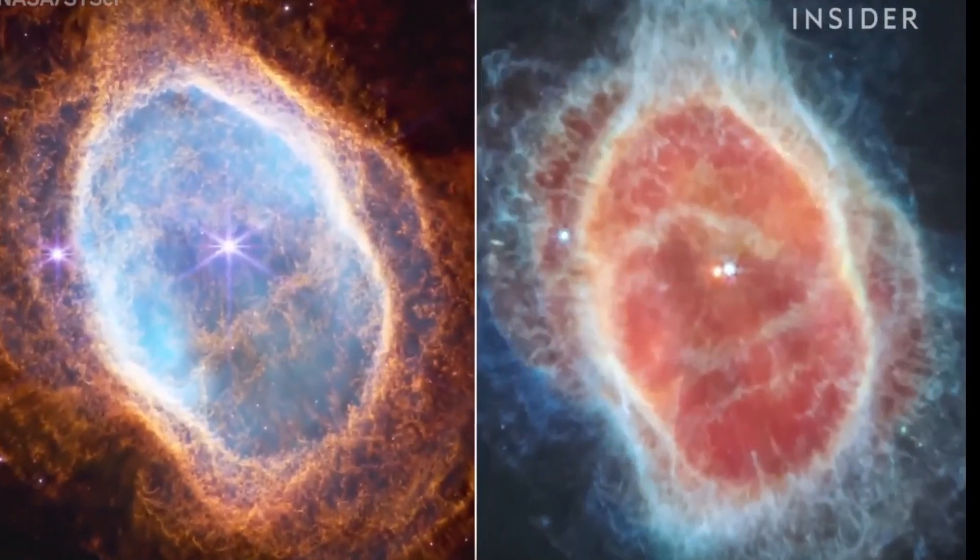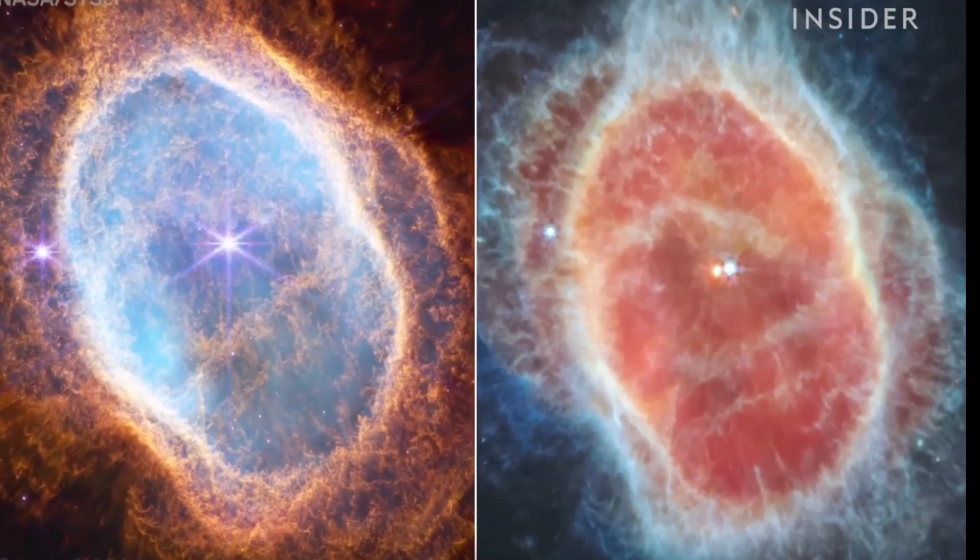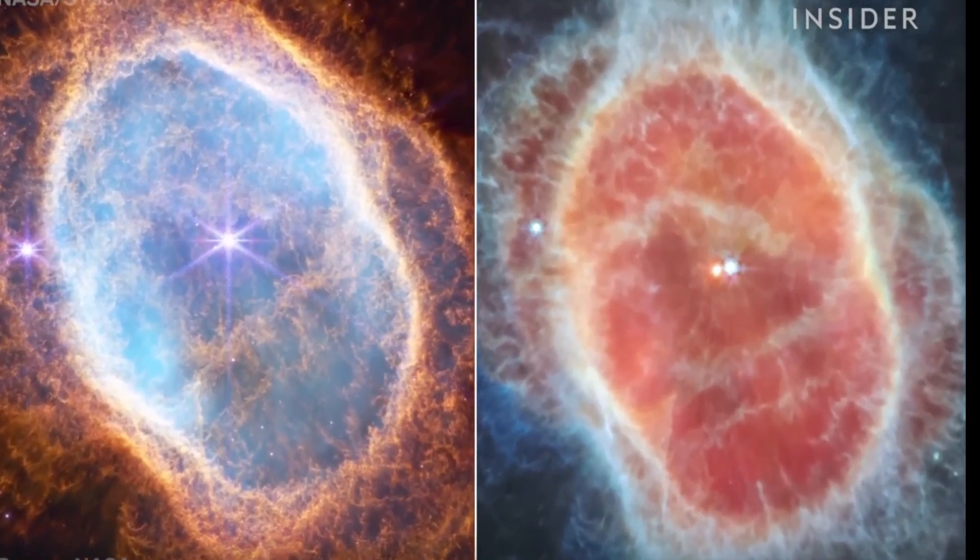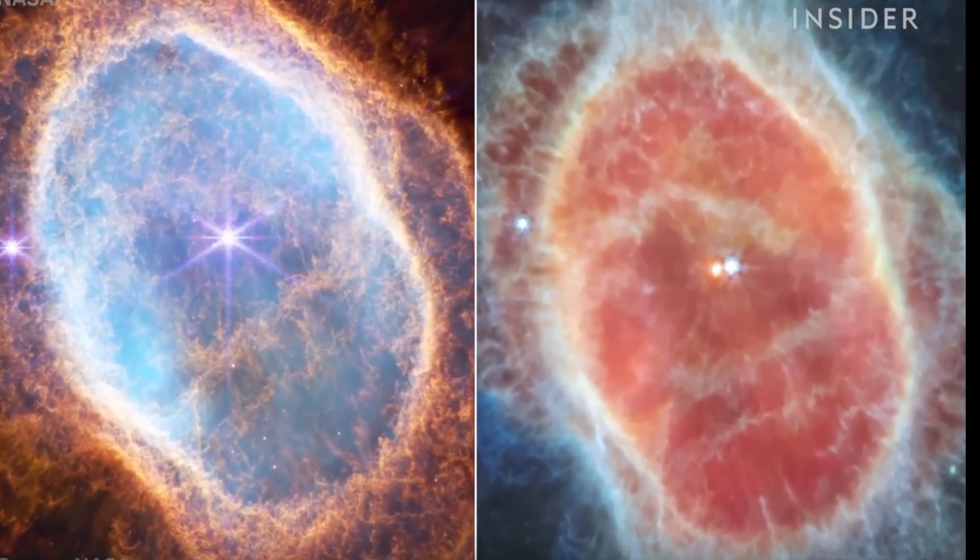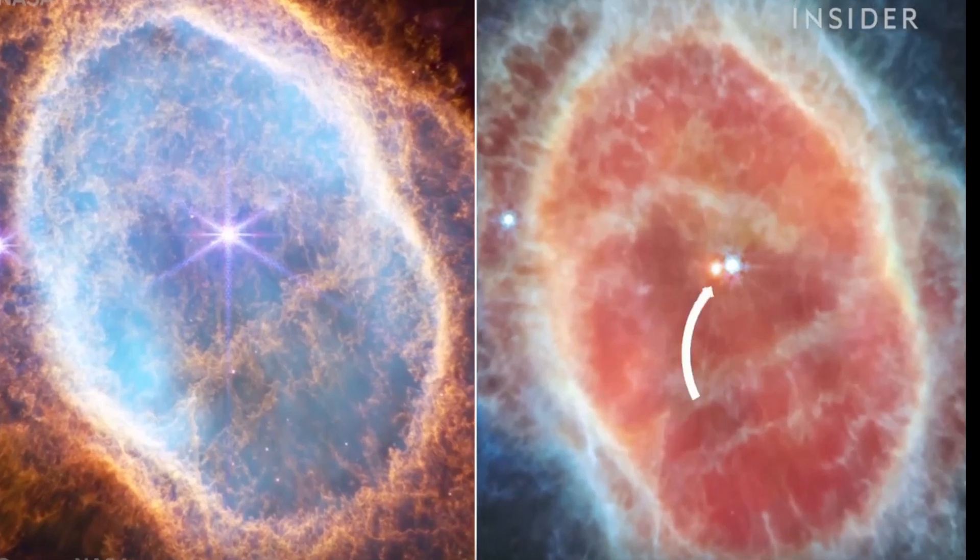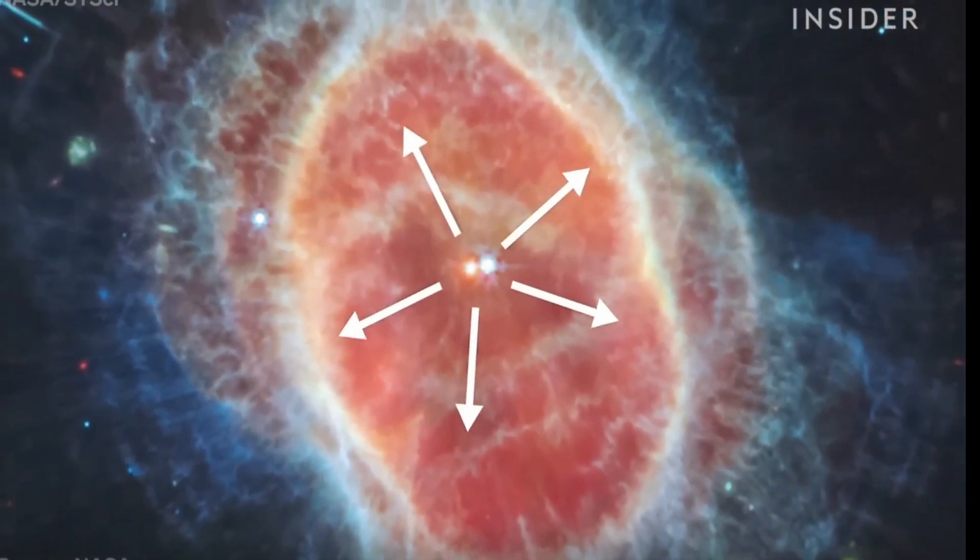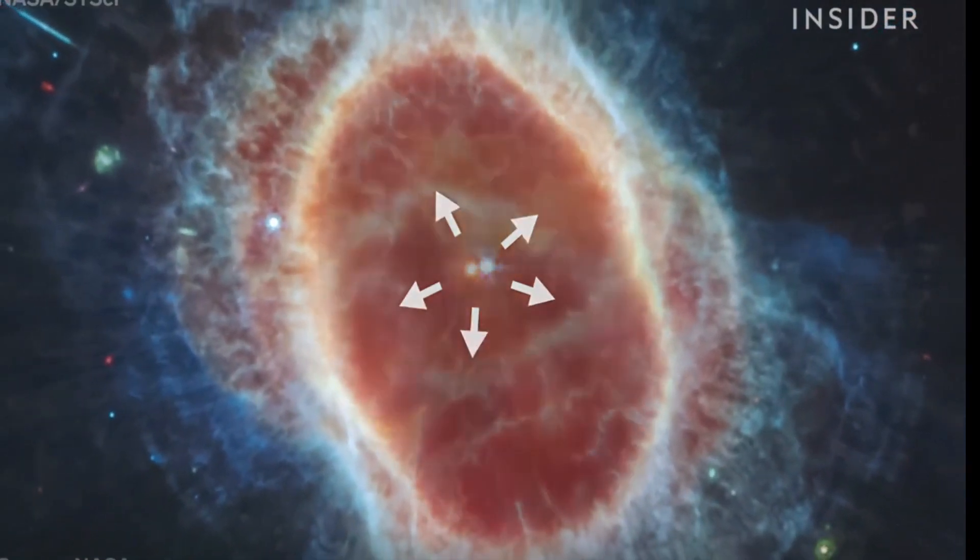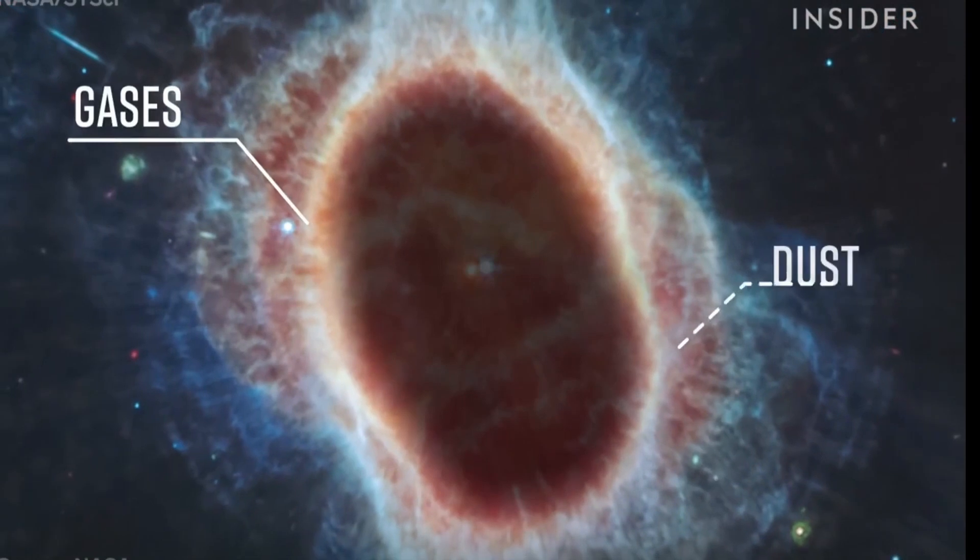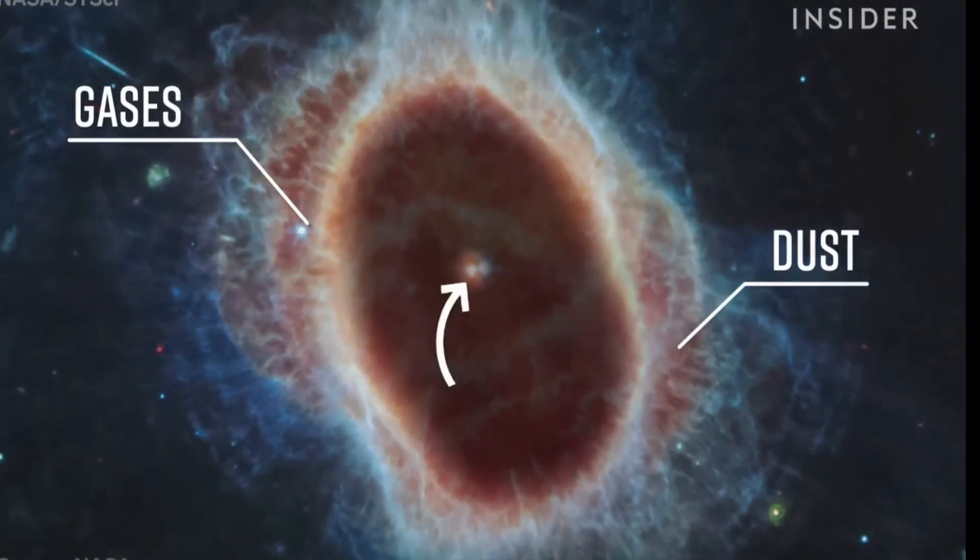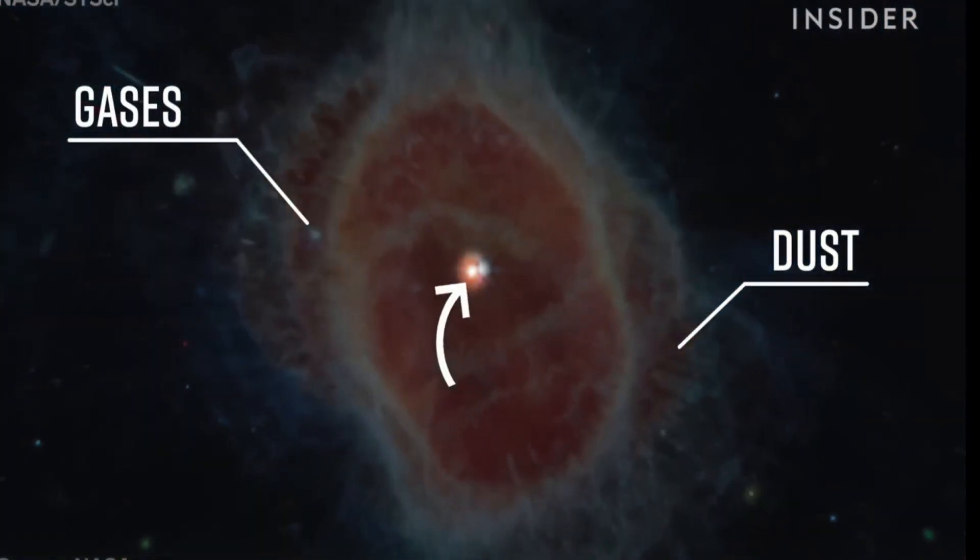Webb has also revealed images of stars dying. These two photos show the same phenomenon under two different infrared filters. Here, we see the dying star, which scientists call a white dwarf. It's shedding its outer layers. These rings are made up of gases and dust. This star emitted them for thousands of years after it died.